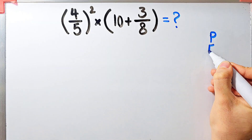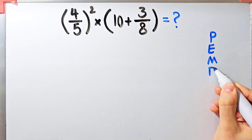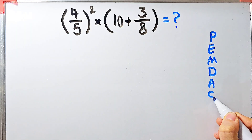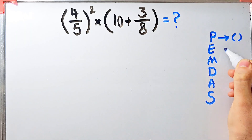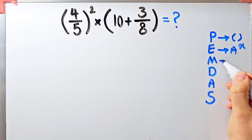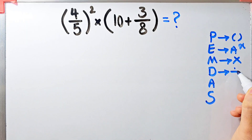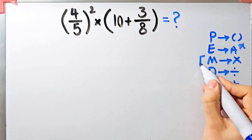To solve this question we need to follow the order of operations, which is PEMDAS. PEMDAS shows the priority of the mathematical operations, and if you don't pay attention to this rule you get the wrong answer. P stands for parentheses, E stands for exponent, M stands for multiplication, D stands for division.